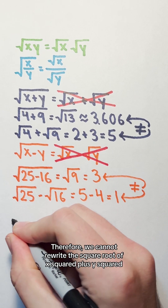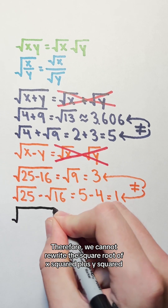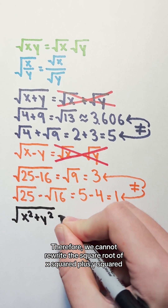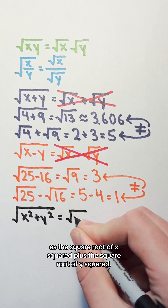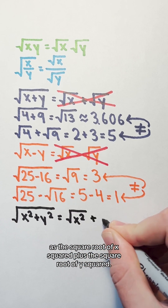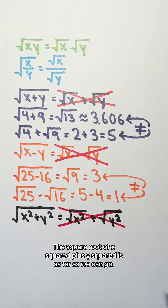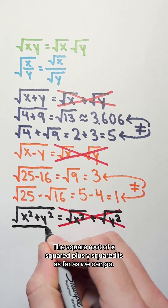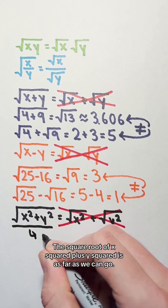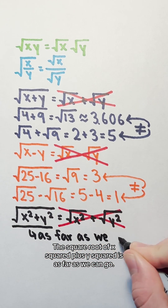Therefore, we cannot rewrite the square root of x squared plus y squared as the square root of x squared plus the square root of y squared. The square root of x squared plus y squared is as far as we can go.